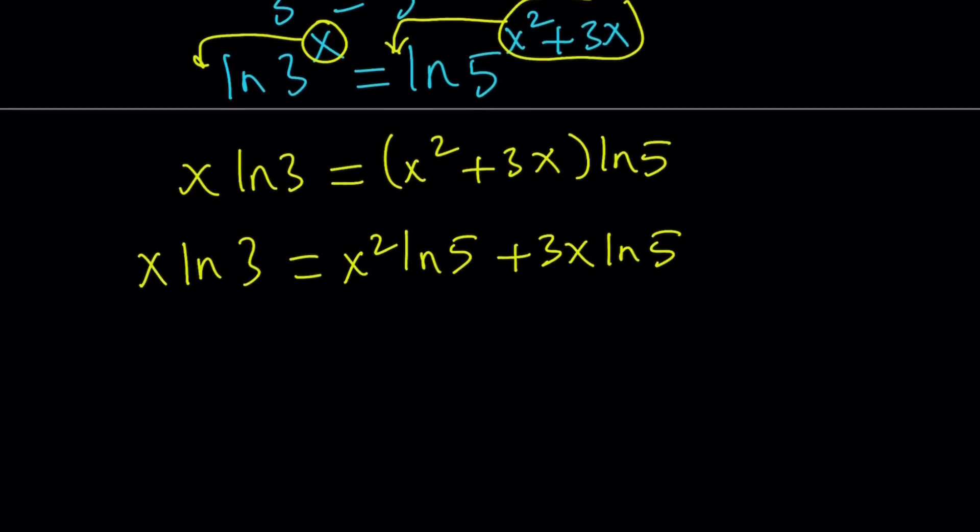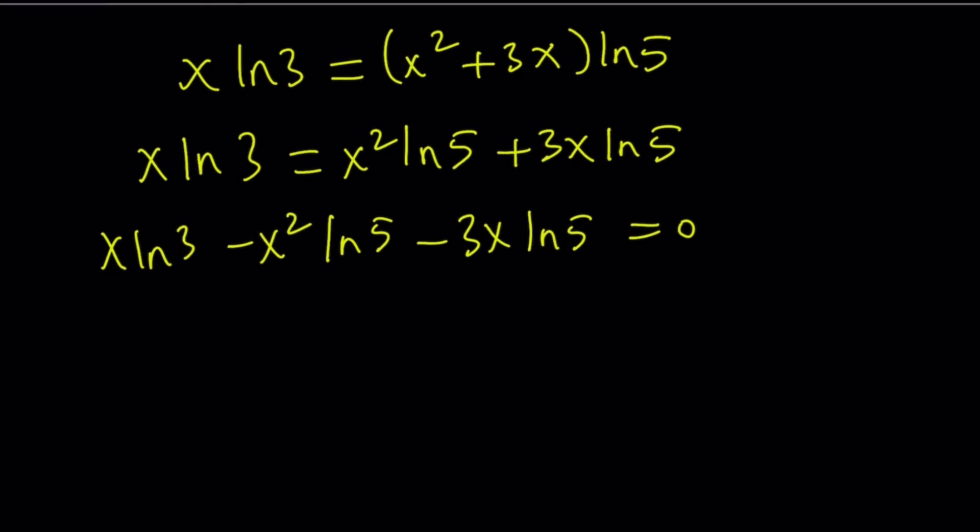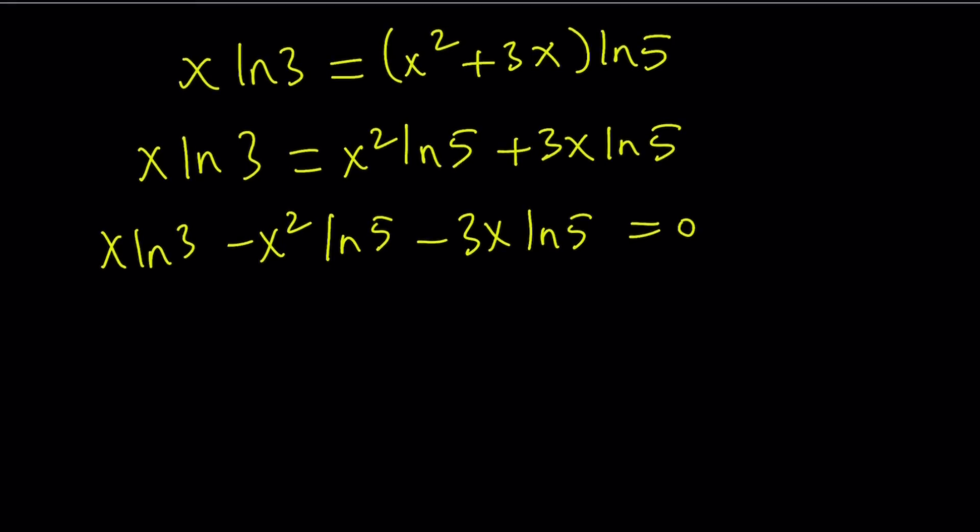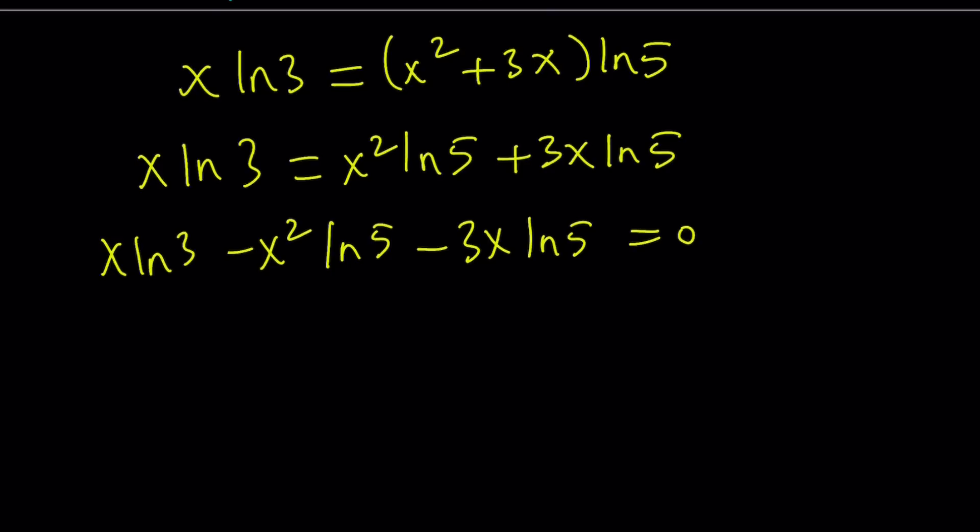So, in an effort to factor this, let's go ahead and put everything on the same side. x·ln3 - x²·ln5 - 3x·ln5 = 0. We could keep the x² + 3x together, but that's not what I want to do. I want to take out an x from this expression. Why? Because that's going to give us one of the solutions as before. So, let's go ahead and take out x. We're going to get x times (ln3 - x·ln5 - 3·ln5). And that's equal to 0.